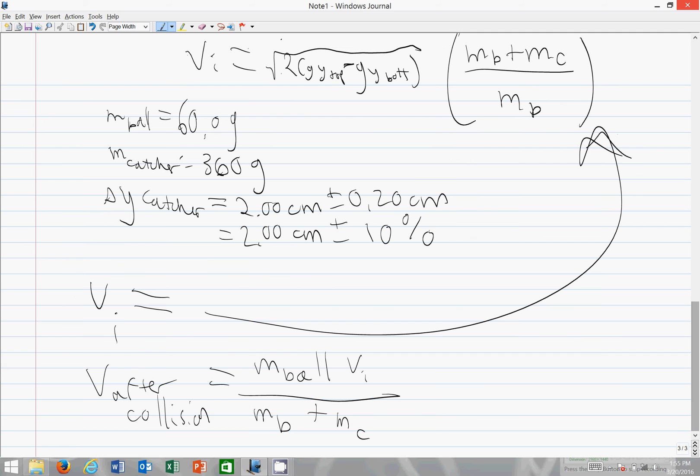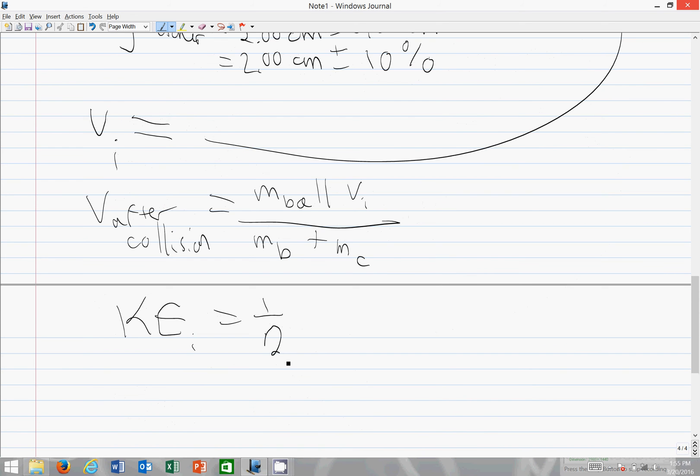And for KE initial you simply use one half m v squared. So what is the m? The v is v initial because we're talking about KE initial. The m is the mass of the ball because at the very beginning of the situation the ball is moving at some velocity v i and it has not yet hit the catcher. So all of the mass that we care about is just this because it hasn't interacted yet with the catcher.